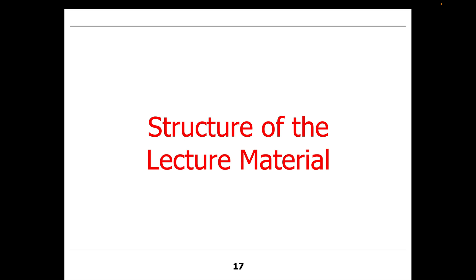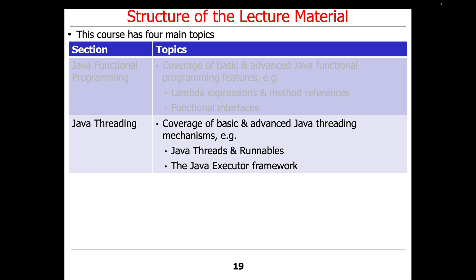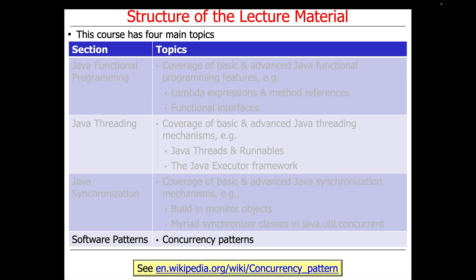Let's talk a bit about the structure of the lecture material. As mentioned before, there are four main topics in the course, starting with Java functional programming. We'll cover Java threading — things like Java threads, Java runnables, the Java executor framework from a whole bunch of different points of view. We'll cover both basic and advanced Java synchronization mechanisms, with many classes providing these capabilities. And of course, we'll also talk about software patterns used to guide the development and successful application of application and system frameworks.